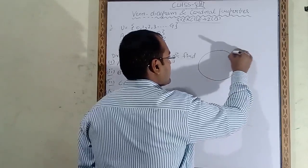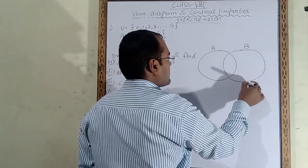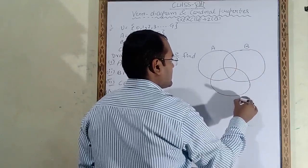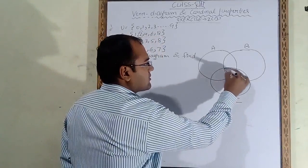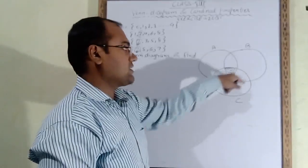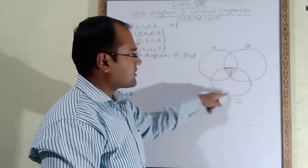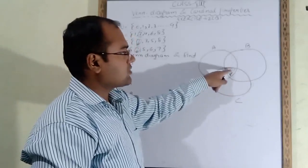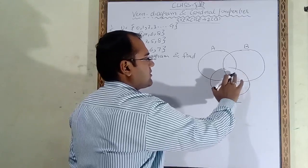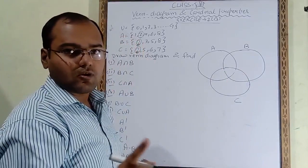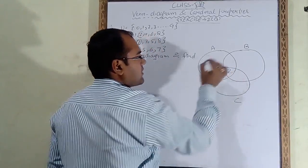Draw three circles — circle A, circle B, and circle C — overlapping so that the central region is common to all three. Fill the central region first with the element common to all three sets, which is 2. Next, find elements common to A and B only: 2 and 8 are common in A and B. Since 2 is already written, fill 8 in the region common to A and B.